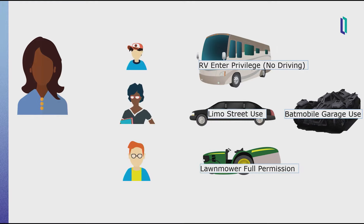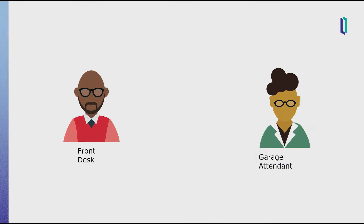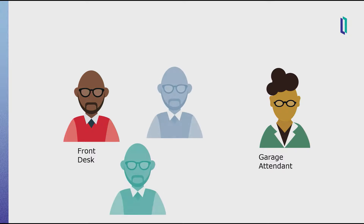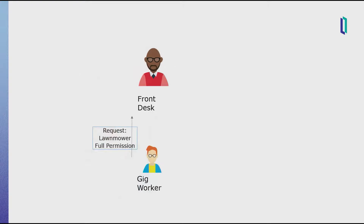But let's say they have some employees or gig workers they'd like to give specific access to some of these vehicles. For instance, there's an intern they want to allow to go inside the RV to restock the soda. They have a chauffeur they want to let use the limo out on the street, but only let use the Batmobile inside the garage just to see that it's still working. And there's a random gig worker they've never met and want to give full access to their lawnmower so they can mow their many lawns. This can be done with the help of different parties at the parking garage: the front desk worker and the garage attendant.